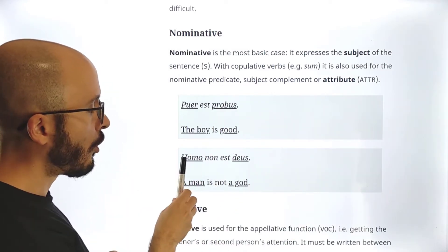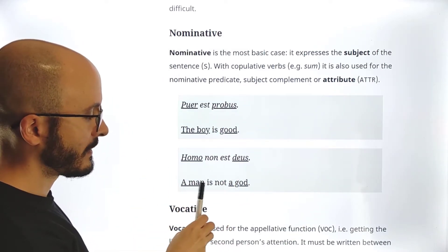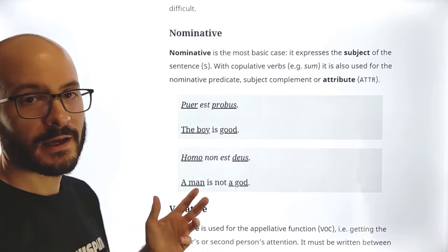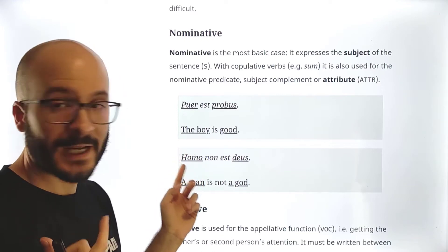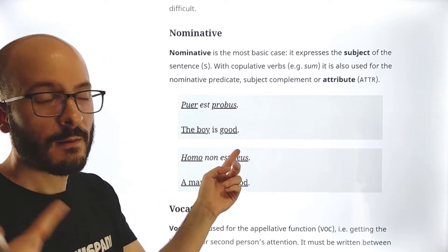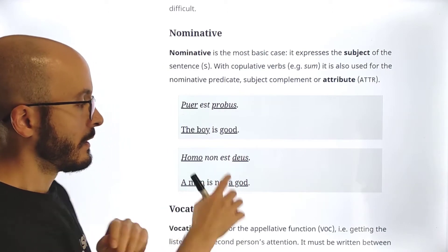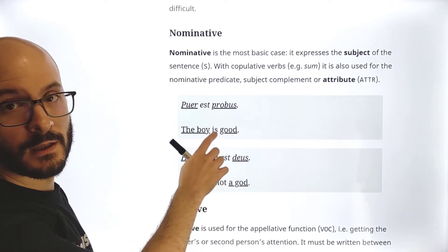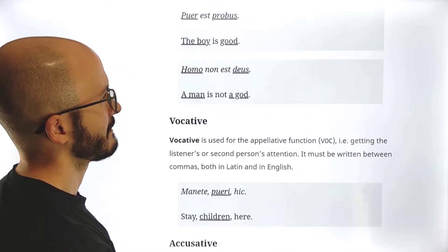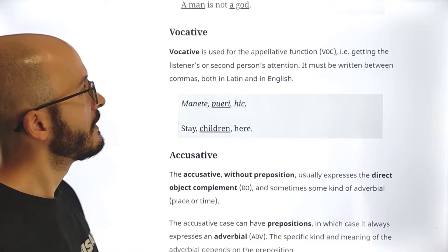We will elaborate on that a bit later. Then, for example, Homo non est Deus, a man is not a god. So again, Homo is the nominative because it's subject, and Deus is also nominative because it's the attribute, because it's with the verb to be, the verb sum. So that's nominative, quite simple. It's like no problem there.